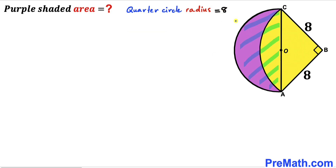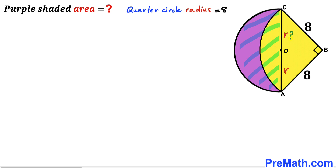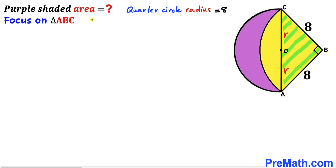Now let's focus on the semi-circle with center O. We can see AO is the radius of this semi-circle — I'll label that lowercase r — and likewise OC has length r as well. Our task is to calculate the value of r. Let's focus on right triangle ABC and make an observation.